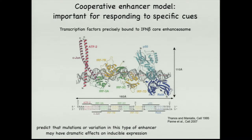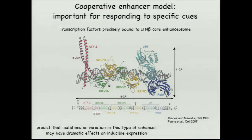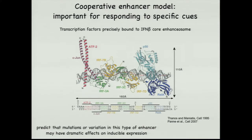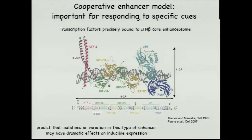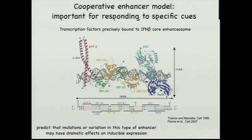A really nice example of one of those models comes from early studies by Maniatis — a beautiful example of how discrete protein-protein interactions, and even the way that a protein is bound to the DNA, matter enormously. You can't even move factors half a helix away on the DNA or else you will not get the same transcriptional output. All of these factors must bind cooperatively to respond appropriately to viral infection and turn on this gene. This type of enhancer with very strong cooperative binding may also be more susceptible to common variants in these regions that can disrupt that response.